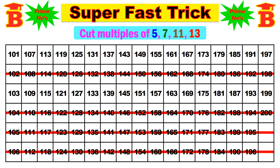First, let us see the multiples of 5 — that is very easy. The numbers ending with 5 are multiples of 5. Here we have 125, 155, 185, 115, 145, and 175. We can identify these very easily using diagonal lines. So just cross out 125, 115, 155, 145, 185, and 175.